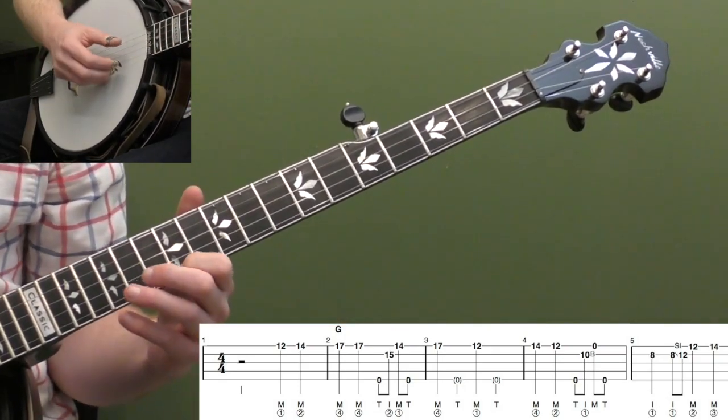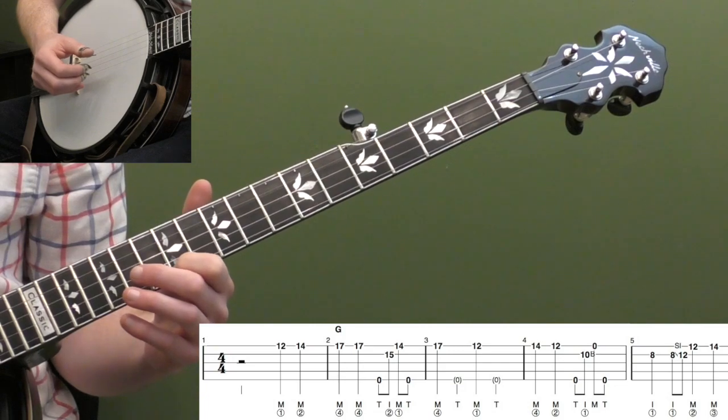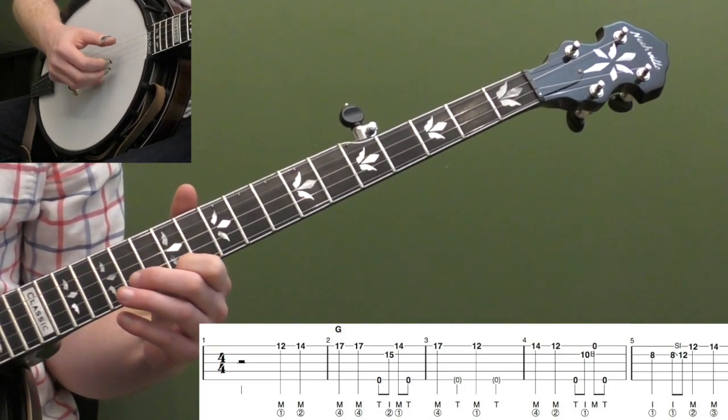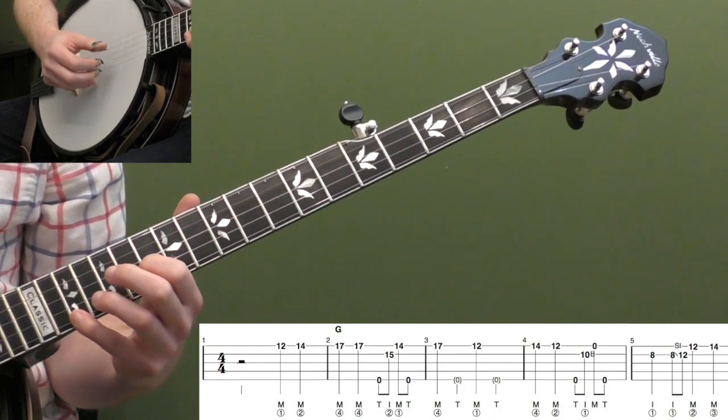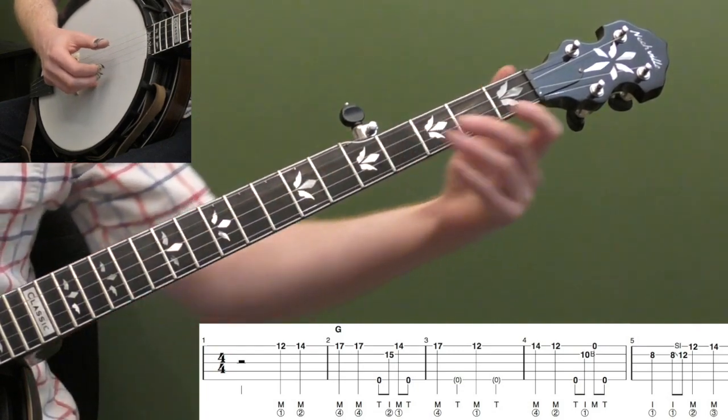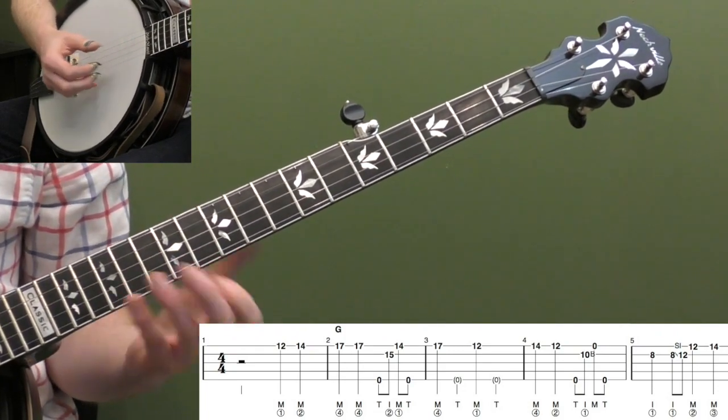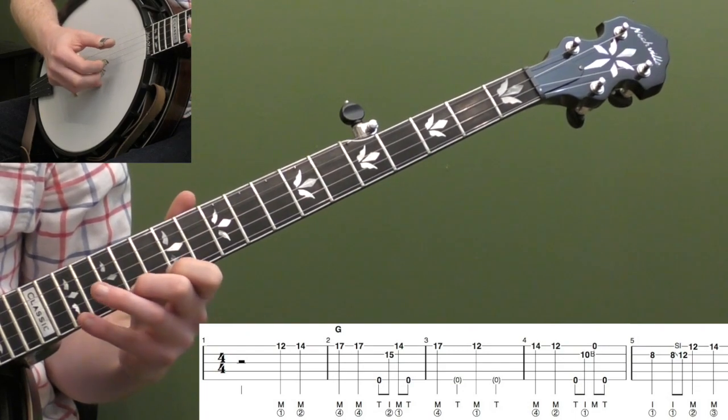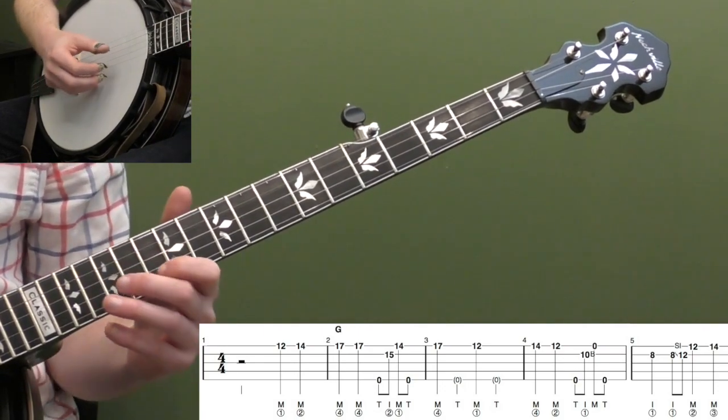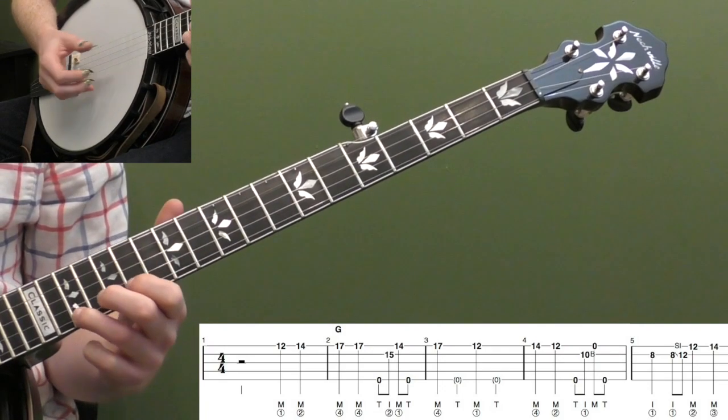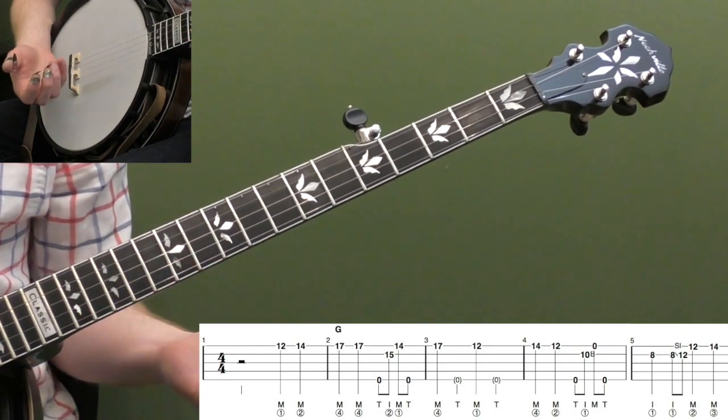So we're going to start with our first finger on the 12th fret of the first string on beat three of measure one. So the first two beats are rest. So one, two, and then we're going to play three. And then I'm going to use my second finger on the 14th fret. And then we're going to reach our pinky all the way up to the 17th fret. So it's just these notes down here. You might be familiar with this position if you've played some of those Scruggs licks. That's basically the position we're working out of. And you could really experiment with what fingers you use if you want to use your first three fingers. For me, I like using my first, second, and pinky. That's what works best for me.